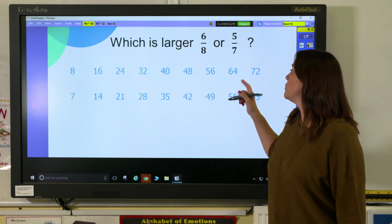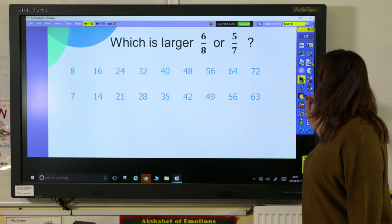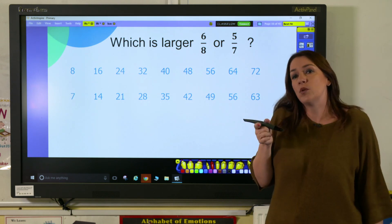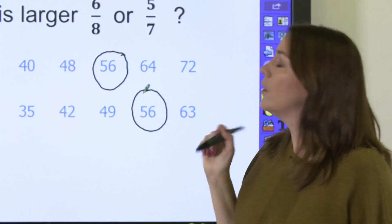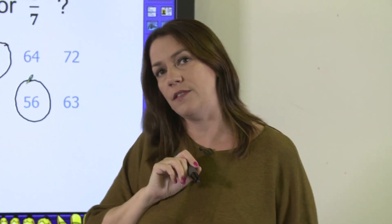So here, I have the multiples of 8 written out and the multiples of 7. And you can see that between them, they have a common multiple of 56. So I'm going to convert both fractions into 56.